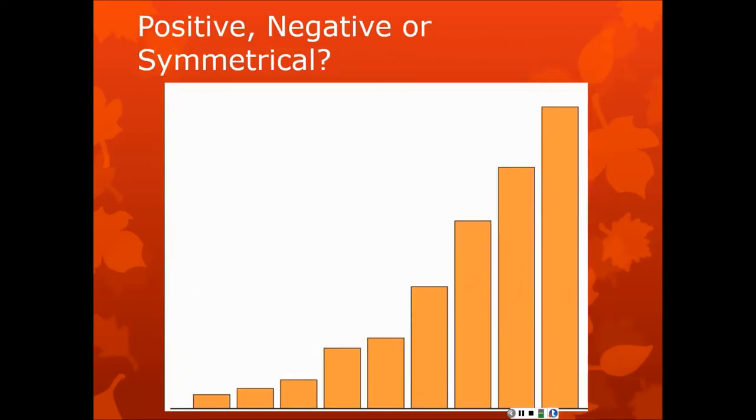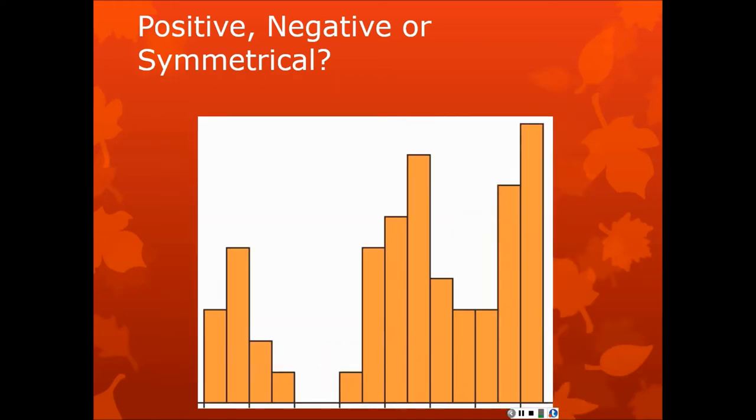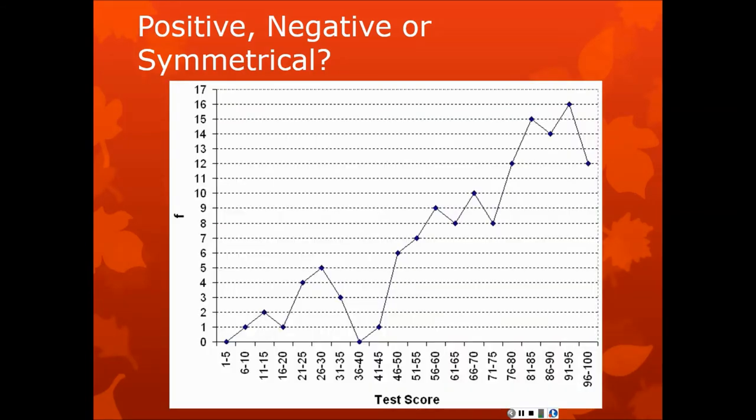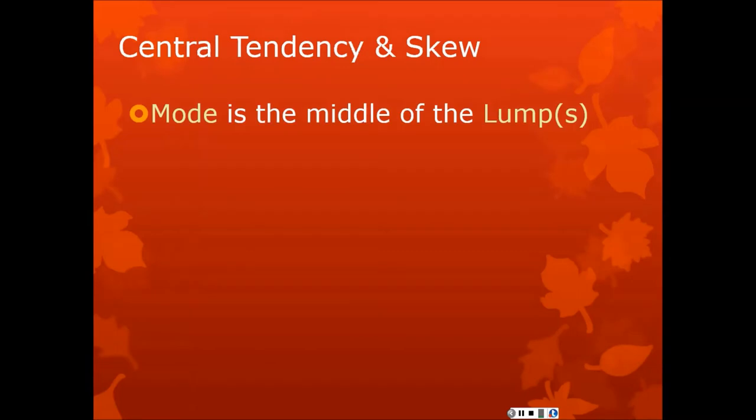So the direction of skew linguistically that we use is it's in the direction of the tail, not the lump. So it has a tail going off to the right, so it's a positive skew. And when you have a big numerical variable that has a lot of values in it, a lot of potential values, and a lot of individual observations across those values, then sometimes the mean, the median, and the mode, you can just look at those numbers and learn about the skew.